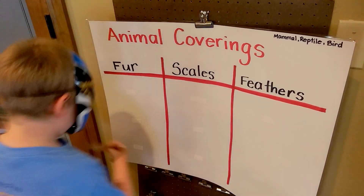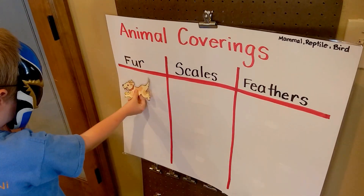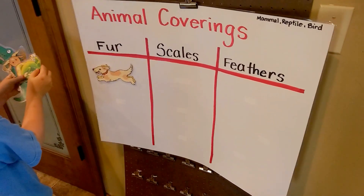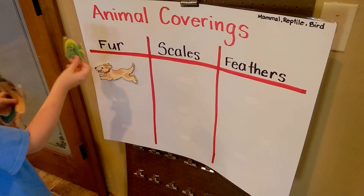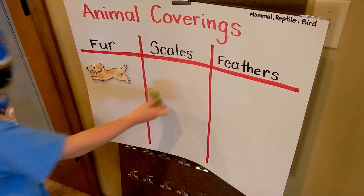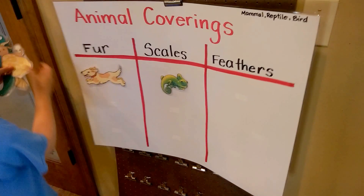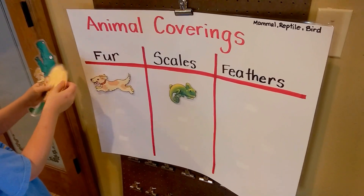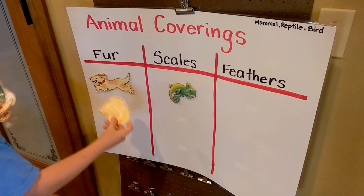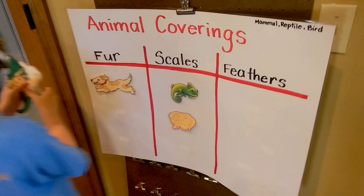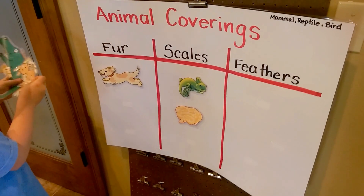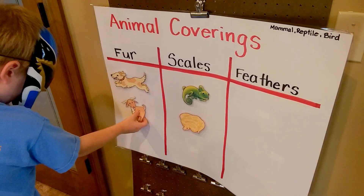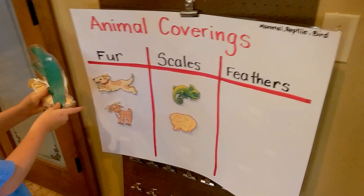This is a dog and it goes with fur. Dogs have fur, that's right. This is a chameleon, and they have scales. Very good. This one is a snake, and they have scales. Snakes have scales too. This is a goat and it has fur. A goat has fur, very good.